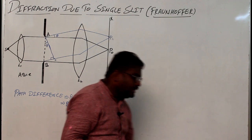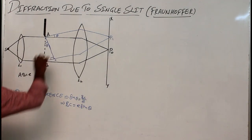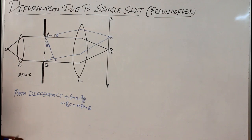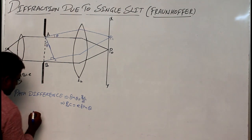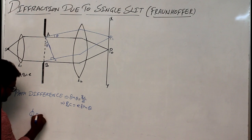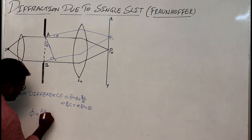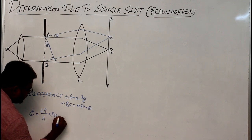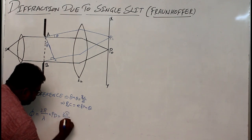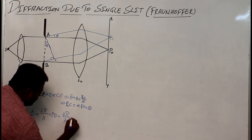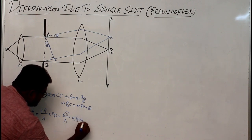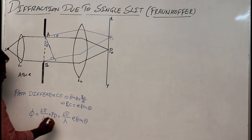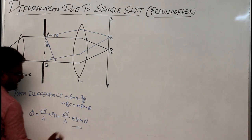There is also a phase difference. Whenever the light rays are diffracted, there exists some phase difference. The phase difference φ between two light rays can be calculated as (2π/λ) × path difference, which equals (2π/λ)·e·sinθ.